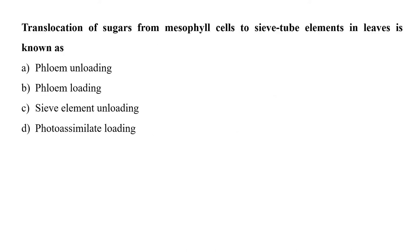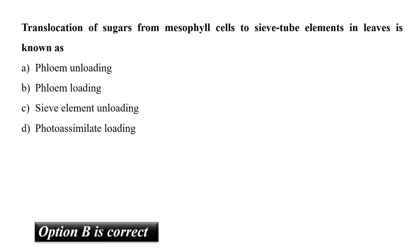The next question is: translocation of sugars from mesophyll cells to sieve tube elements in leaves is known as? The correct option is B, that is phloem loading. Sugars such as sucrose produced in mesophyll cells move to sieve tubes of the smallest veins of the leaves, and consequently the concentration of sugars increases in the sieve tubes in comparison to surrounding mesophyll cells.